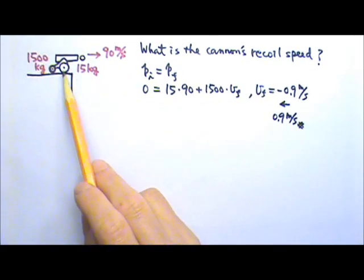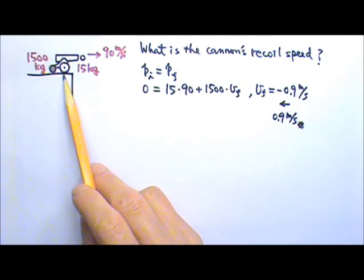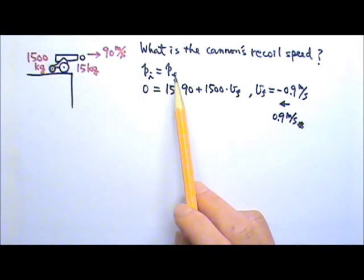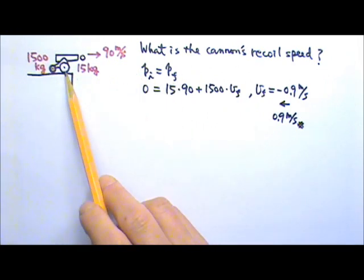However, the friction on the cannon by the ground is not an internal force and it's not canceled. So in order for us to be able to use momentum conservation, there has to be negligible friction between the cannon and the ground.